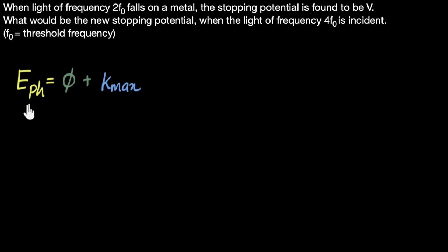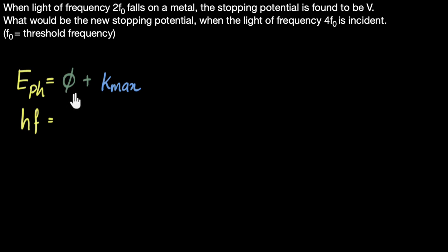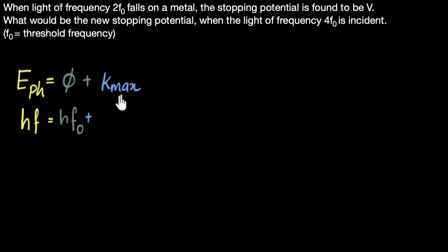The energy of the photon is H times F — Planck's constant times the frequency. What is the work function? Work function is the minimum energy, so I can write that as H times the minimum frequency, which is the threshold frequency.